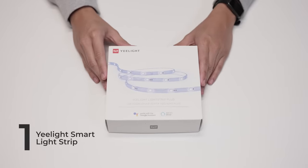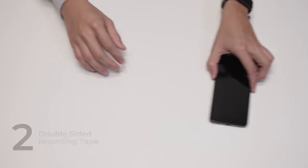Here's what you need to level up your workspace: a Yeelight Smart Light Strip, double-sided mounting tape, and your phone.